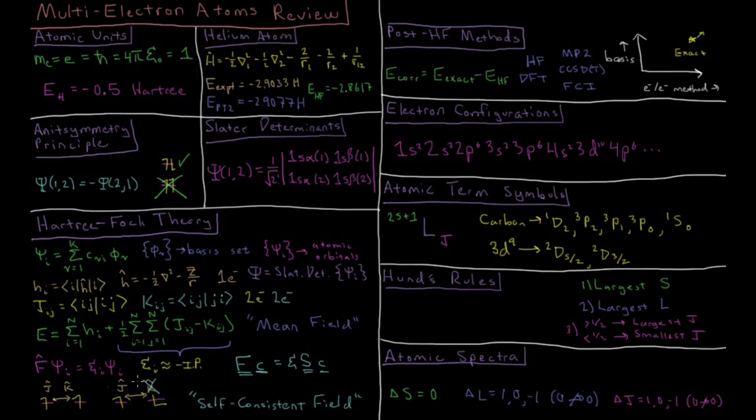This approximation for how electrons interact through Coulomb and exchange integrals is called a mean field approximation because the electrons don't feel each other explicitly. They only interact through this mean field which represents their repulsion from each other on average, because we can't solve for this part of the Hamiltonian exactly.